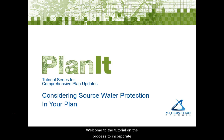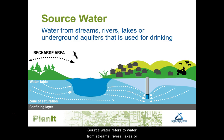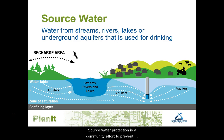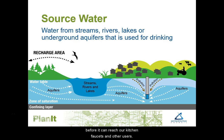Welcome to the tutorial on the process to incorporate source water protection into your comprehensive plan. Source water refers to water from streams, rivers, lakes, or underground aquifers that is used for drinking. Source water protection is a community effort to prevent water pollution before it can reach our kitchen faucets and other users.